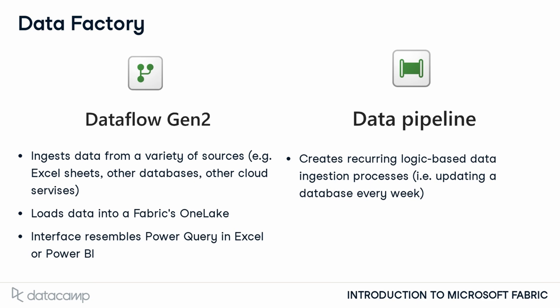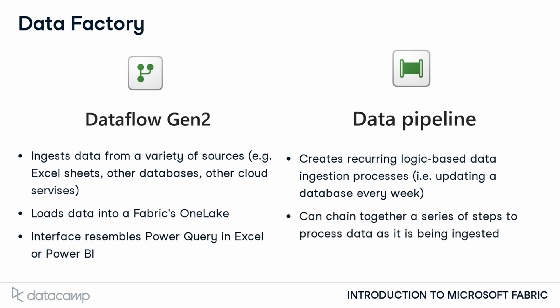Data Pipeline, on the other hand, allows for the creation of data workflows. It's a tool ideal for setting up a regular or logic-based data ingestion process. For example, you can refresh data in Fabric every Monday using a workflow that runs a notebook at the start of every week. Data Flow Gen 2 is great for manual data ingestion, while Data Pipeline is suited for continuous data ingestion processes.